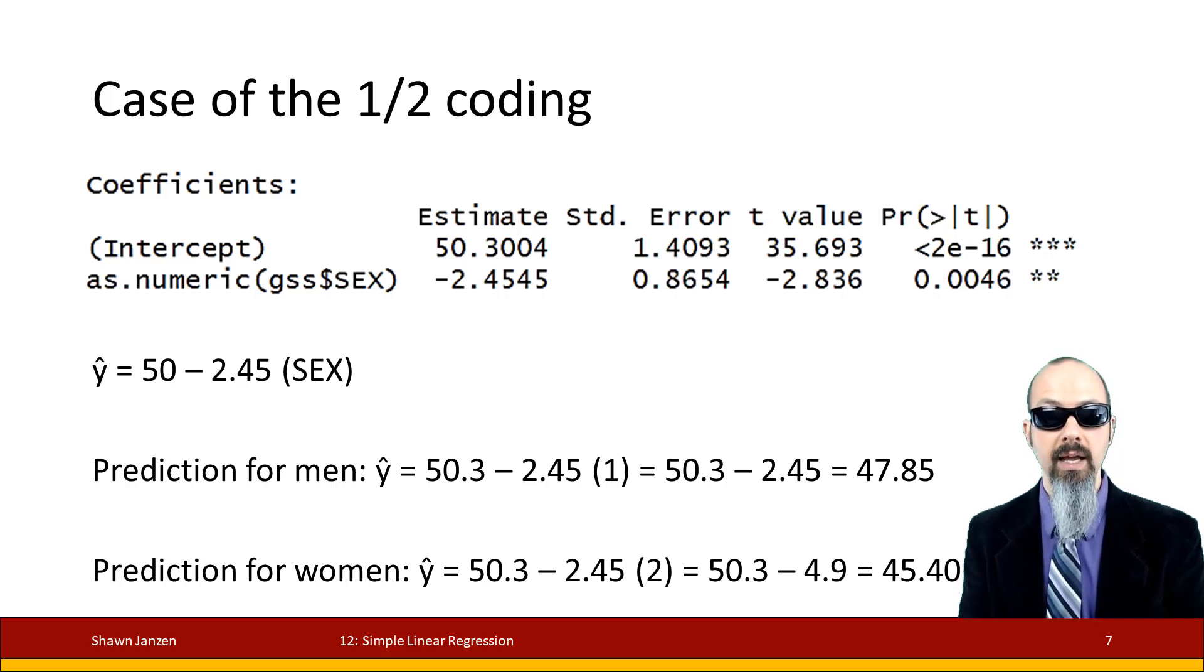When I want the prediction for women, I substitute in for X a value of 2 because women were coded as 2. I do the math out and I get a predicted SEI of 45.4. So women on average tend to have a lower SEI than men and that difference is about 2.45 points. That is actually the coefficient's amount - the difference between them. When you're interpreting these binaries, you're either in one group or you're in the other group, and the higher group is going to be the one that gets the coefficient value more so applied to it.